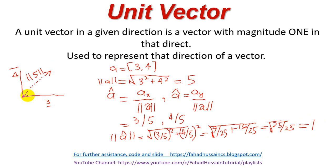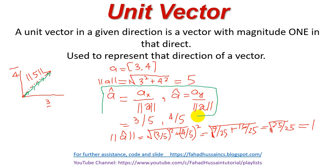Our final result of 1 represents the direction of this vector. The unit vector, with magnitude 1, tells us the direction our vector is pointing. This is a proper example showing that whether we have a 2D or 3D vector, we can use this formula to find the unit vector and determine the direction.